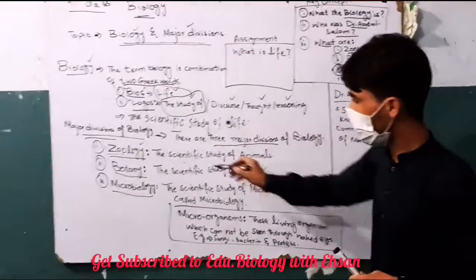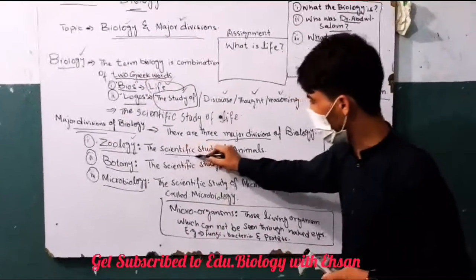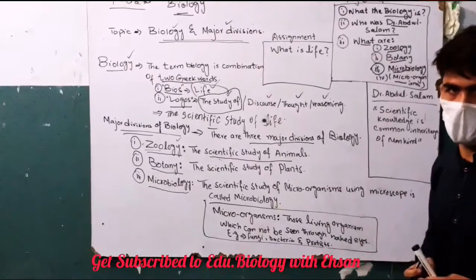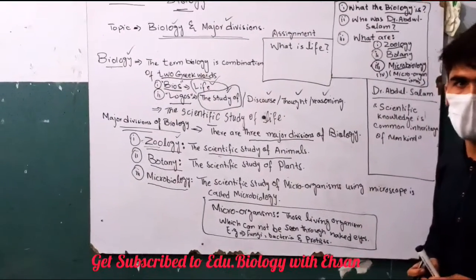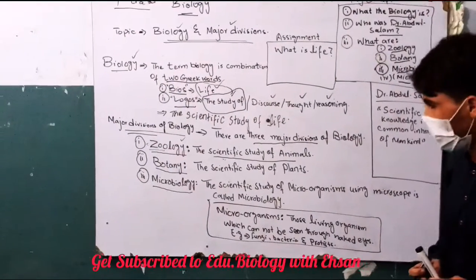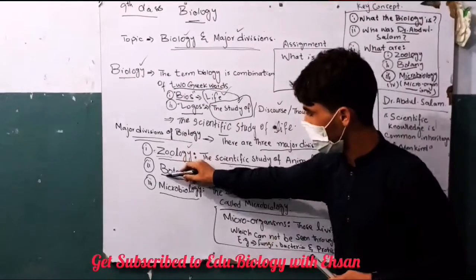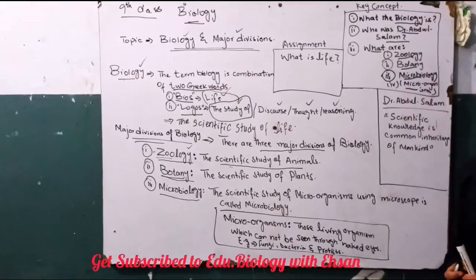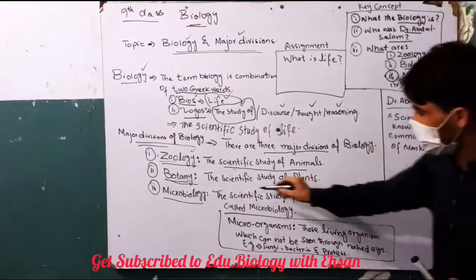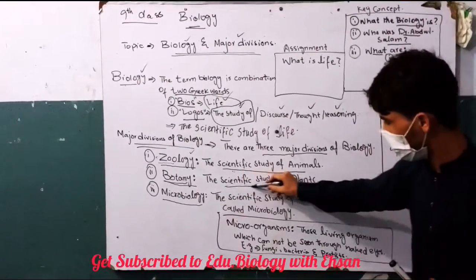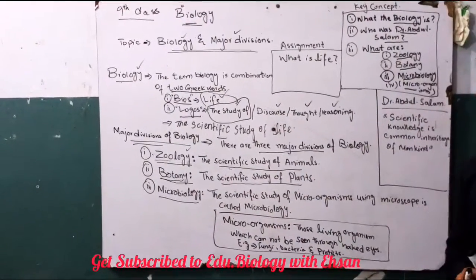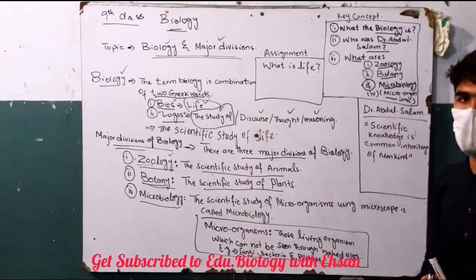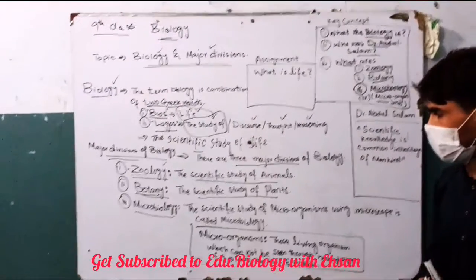So the scientific study of animals is called zoology. With this, we have botany. Botany is the scientific study of plants, so plants are the scientific study of botany.